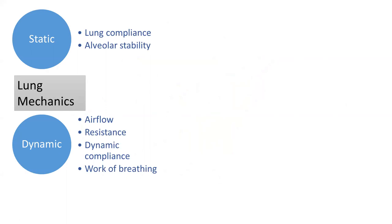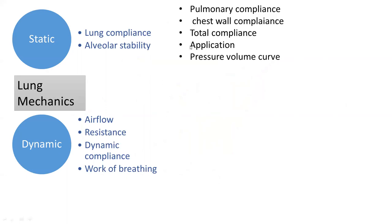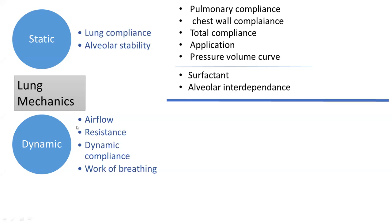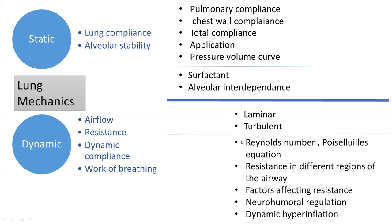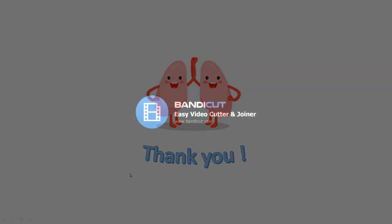In summary, we covered both static and dynamic properties of the lung. In static properties, we saw lung compliance — including pulmonary and chest wall compliance separately, total compliance and its graph, and clinical applications of compliance shifts. We also saw the pressure-volume curve, surfactant, and alveolar interdependence. In the dynamic part, we covered laminar and turbulent airflow, airway resistance including Reynolds number and Poiseuille's equation, resistance distribution in different airway regions, factors affecting resistance, neurohumoral regulation, dynamic hyperinflation, and the concept of work of breathing. Thank you.